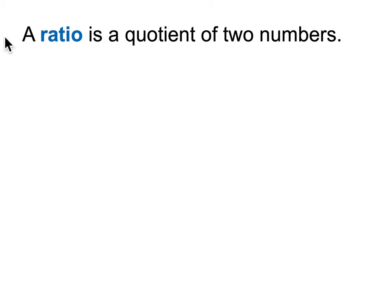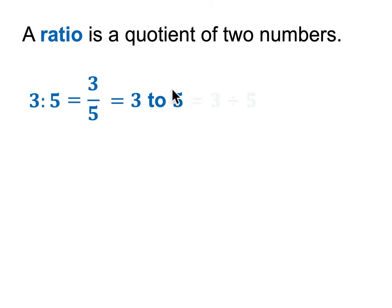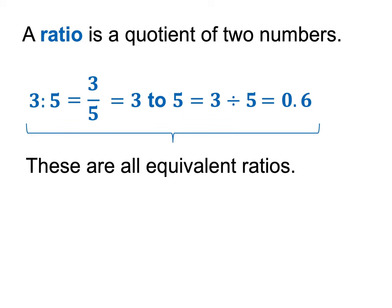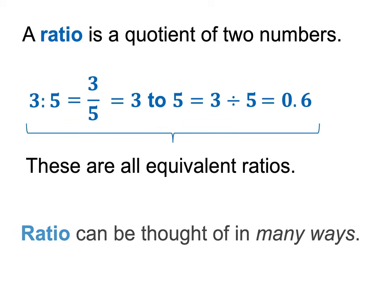A ratio is a quotient of two numbers. For example, you have 3 to 5 written as a fraction, in words, as a division, or maybe simplified to a decimal format. These are really all the same thing. And you want to realize that fractions and ratios are interchangeable — it's really important.